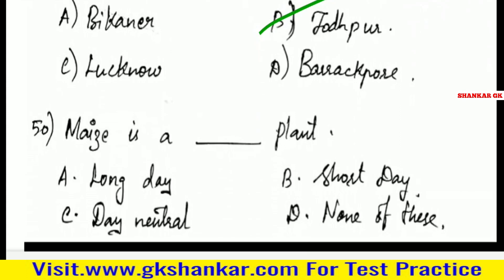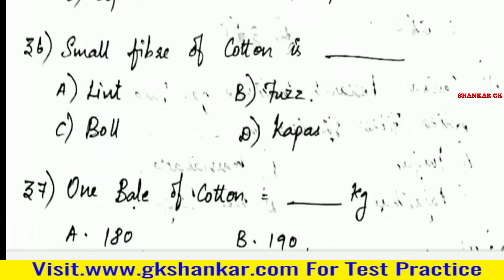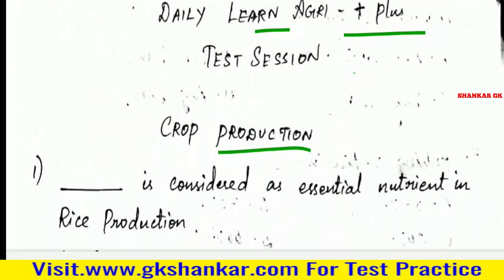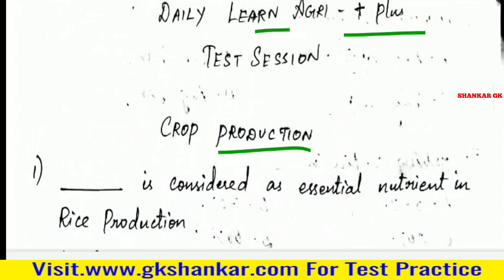Fiftieth question: Maize is a — A. Long day plant, B. Short day plant, C. Day neutral, D. None of these. Answer: B. Short day plant. That completes 50 questions from crop production. See you next time.